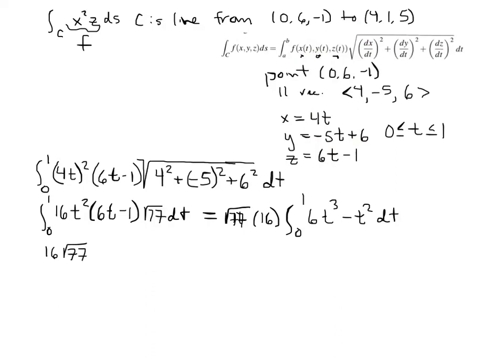So I've got 16 root 77. Then integrate. So t to the 4th over 4. I'm going to simplify that to 3 halves because I've got a 6 on the top. So that would divide by 2. Minus t cubed over 3. And I've got to evaluate that from 0 to 1.